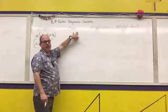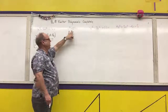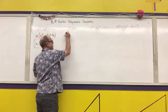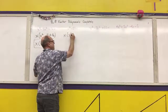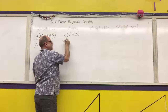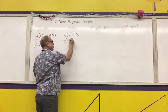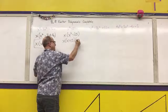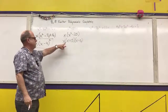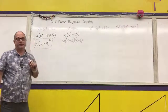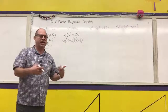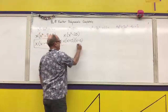The next one: I have x cubed minus 25x — a cubic with only three terms, so it's not factoring by grouping. I can pull an x out of both terms, which leaves x squared minus 25. That's a difference of squares pattern. So it factors as the square root of the first plus the square root of the last, times the square root of the first minus the square root of the last. My final answer is x times (x plus 5) times (x minus 5). When factoring completely, look for common factors to pull out first, then use the other patterns.